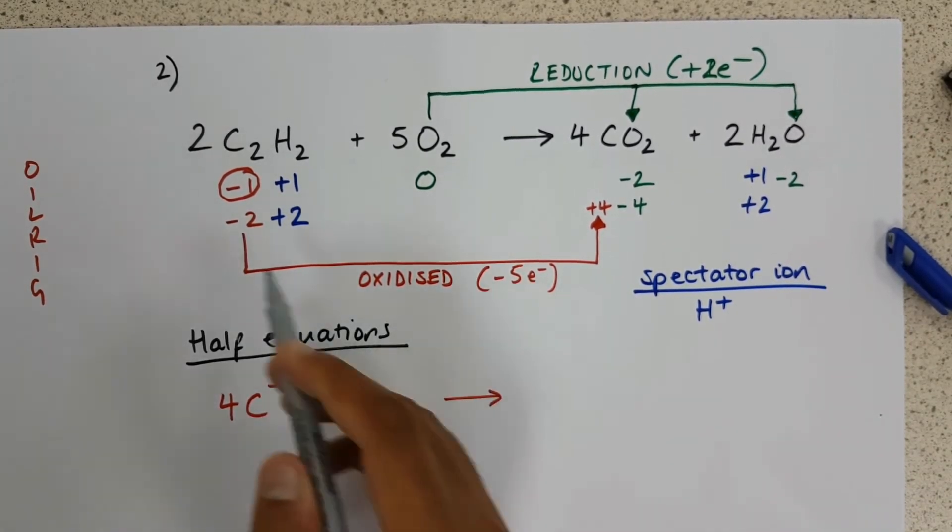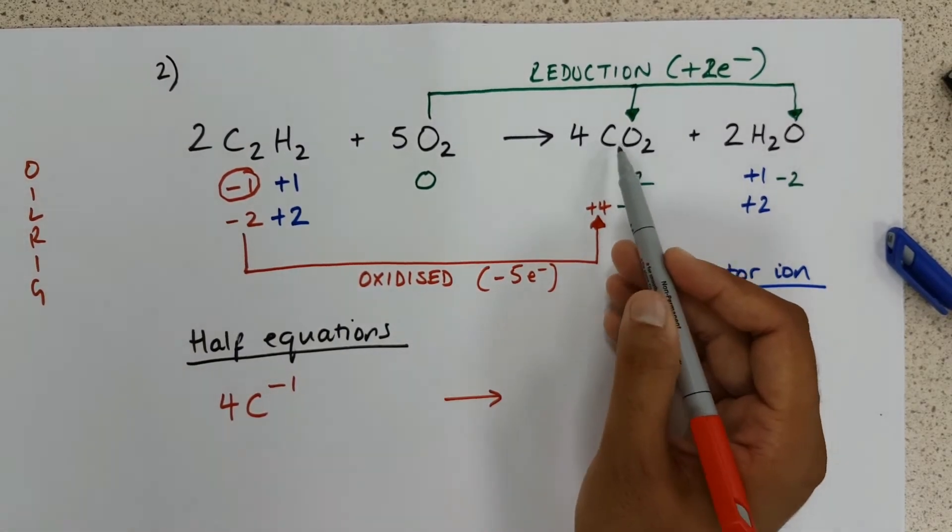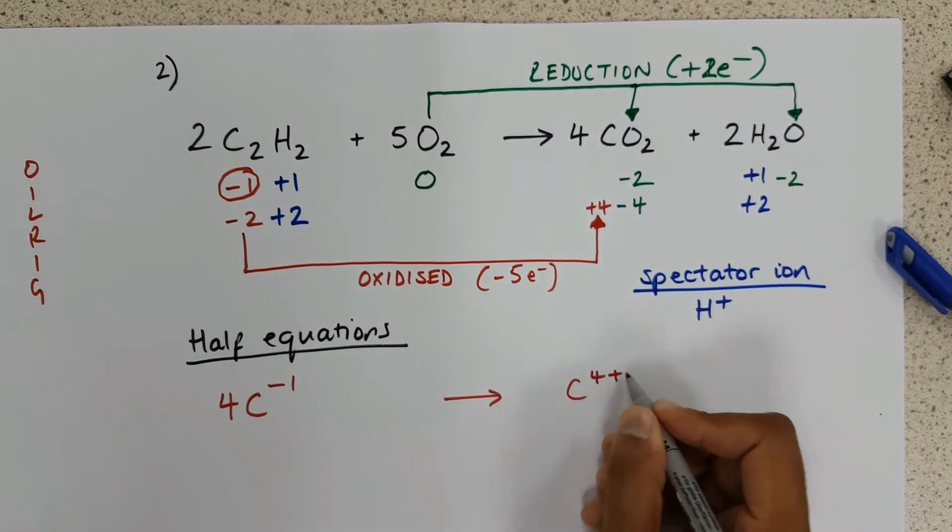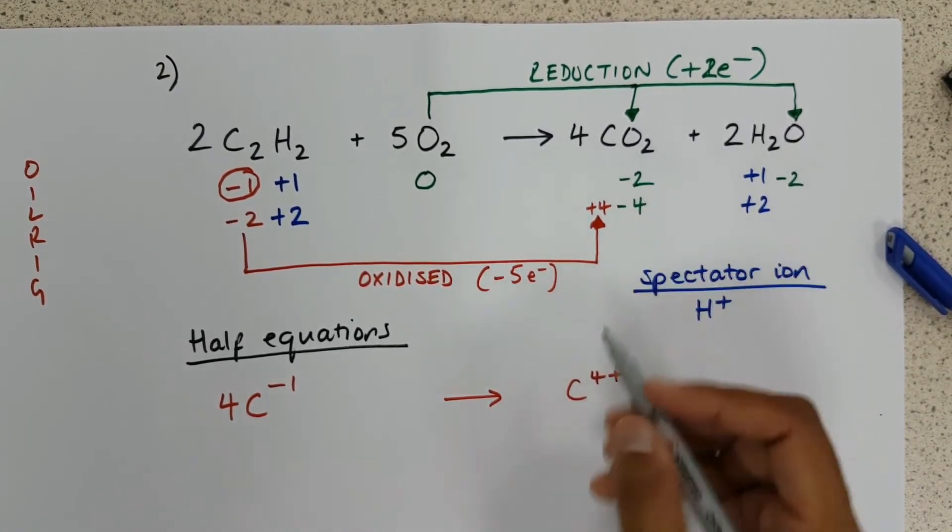Coming across, those carbons end up as carbon four plus ions. And there are four of them.